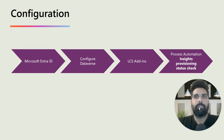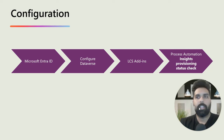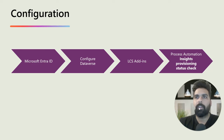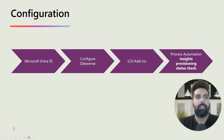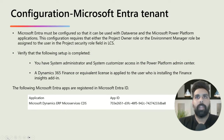There are four key configurations needed. First, you need a connection with your Microsoft Entra ID configured in the system with your environment. Second, you should have the database data warehouse configured. Third, you need the financial insights add-in installed in your LCS. Fourth, in Dynamics 365 Finance and Operations, there is a background batch job — the provisioning status check — that should be running in the system.